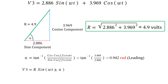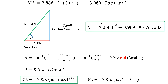To express v3 in the form r sine(ωt ± α), we can now write v3 = 4.9 sine(ωt + 0.942) radians, or equivalently 4.9 sine(θ + 54°). So we've done it and it's been pretty straightforward.